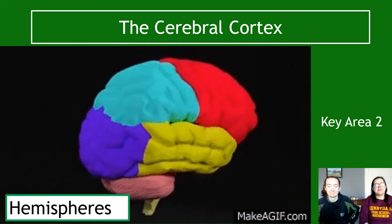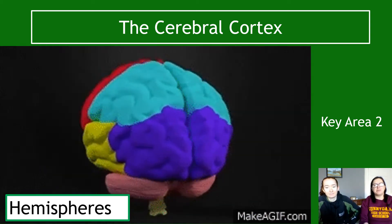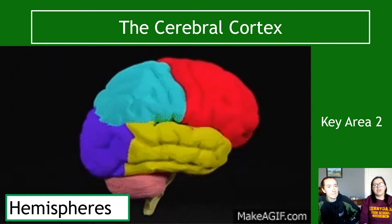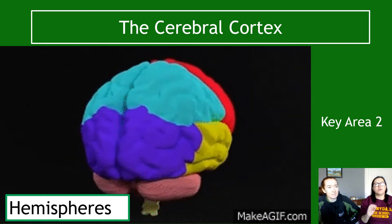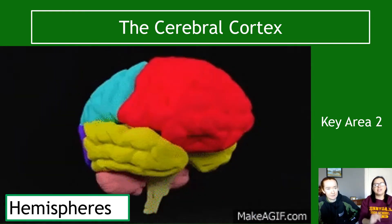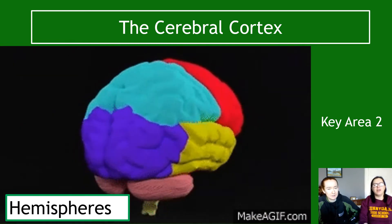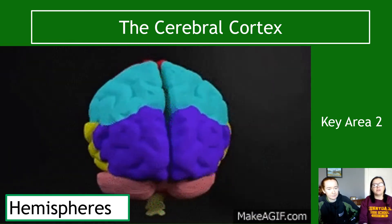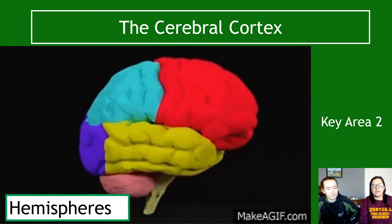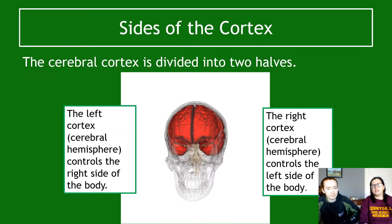Welcome to the hemispheres - this is part two of key area two, still on unit three: neurobiology and immunology. I have color coded all the units, the green unit is the final unit, and today we're looking at hemispheres.